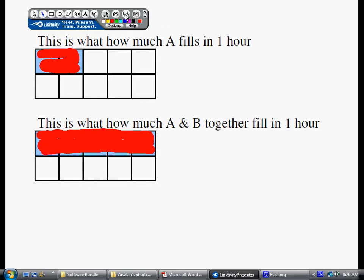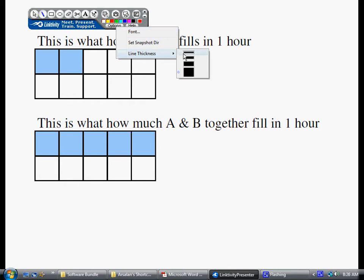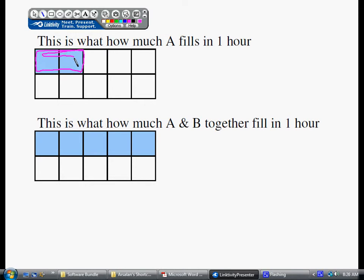Based on these two, I can draw a major conclusion. Machine A does this much in one hour. A alone, okay? Now, machine A and B, when they work together, they do this much in one hour.